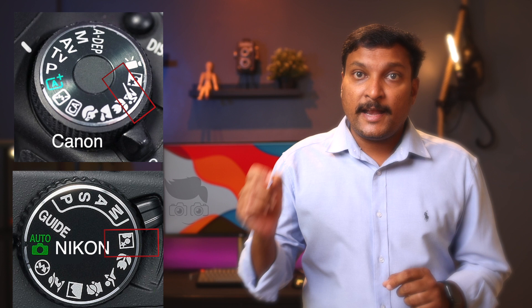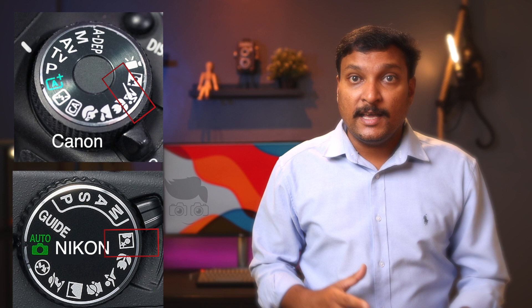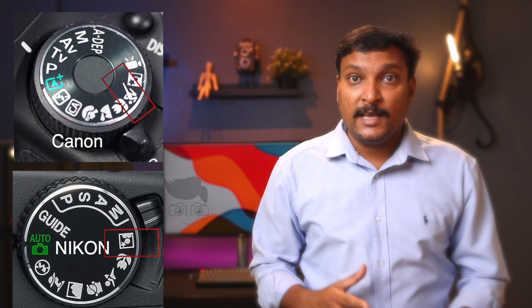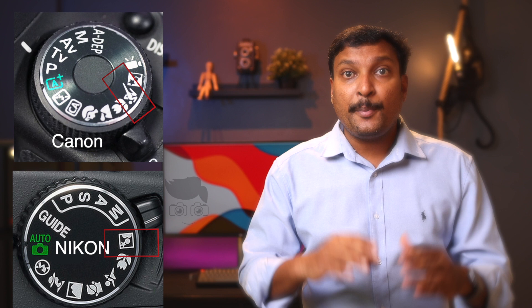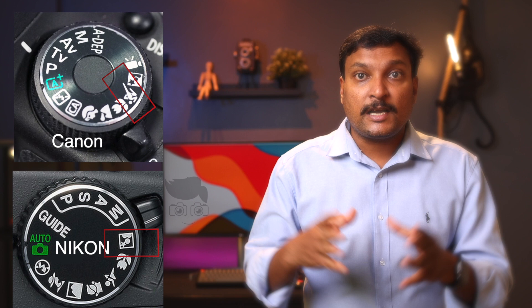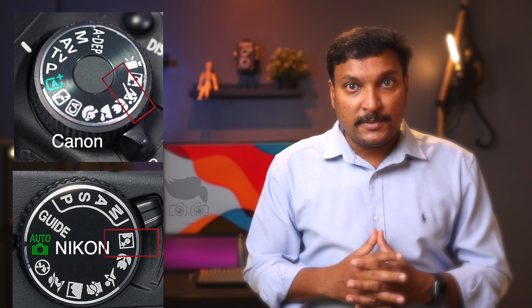This is sports mode, available on Canon and Nikon. In sports mode, the camera controls the shutter speed automatically to freeze fast-moving subjects. This is useful when you want to photograph moving objects and freeze the action.